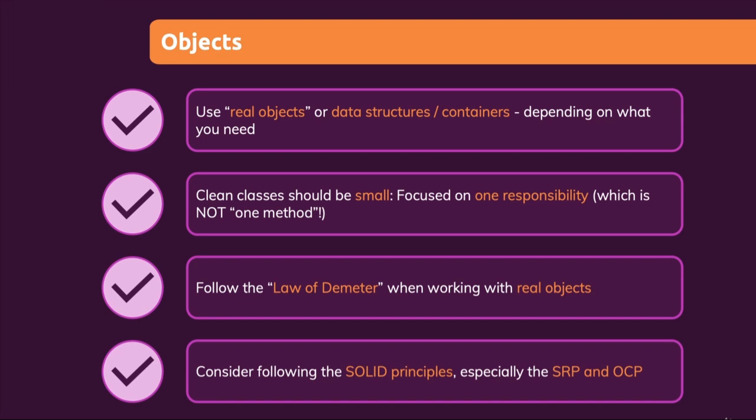These are the main rules and concepts you should keep in mind. You also find this checklist attached — though it's not really a checklist as explained — and you'll also find a PDF document with a checklist you could actually use if you wanted to. You now have all the core rules and concepts which you should always keep in mind when you want to focus on writing clean code.